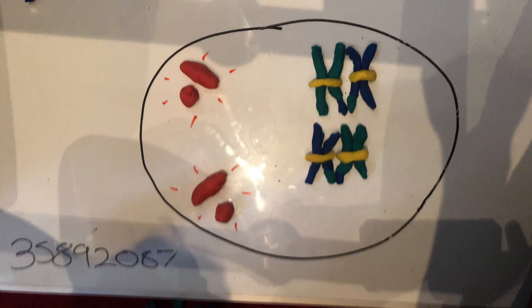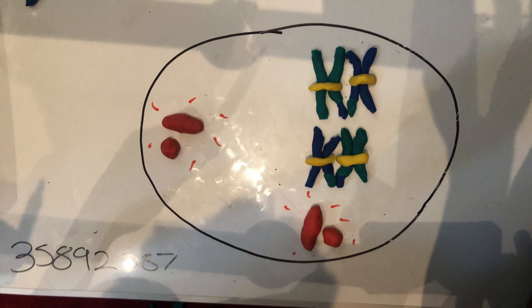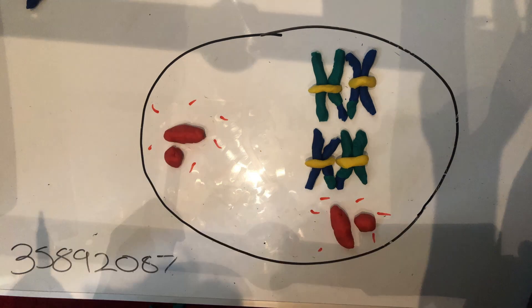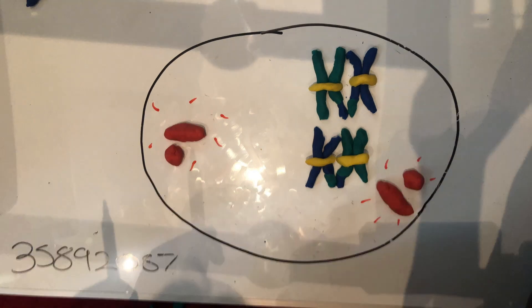Prophase 1 ends with the nuclear membrane disintegrating and the centrioles moving to opposite poles of the cell. As the centrioles move, they extend spindle fibers that form the meiotic spindle. This leads into prometaphase 1.